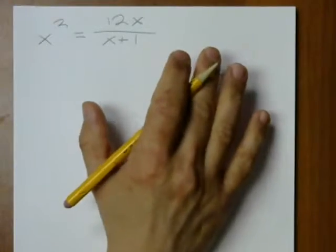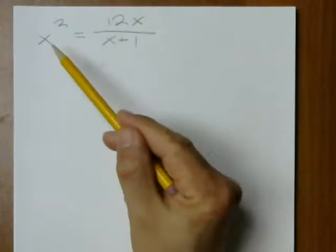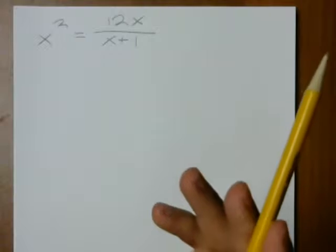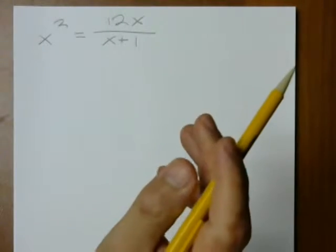Okay, so looking at this, you might say, hey, this is x times x, this is 12 times x, I might want to just divide both sides by x or multiply both sides by 1 over x.